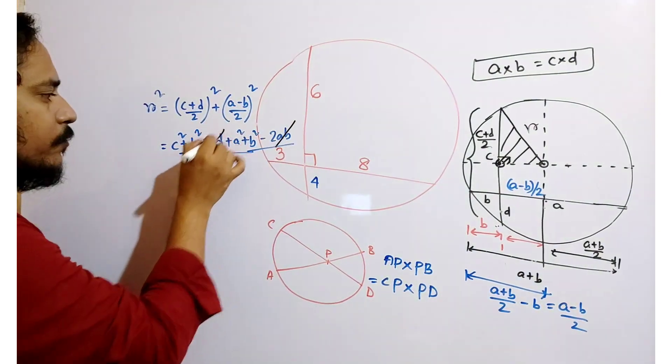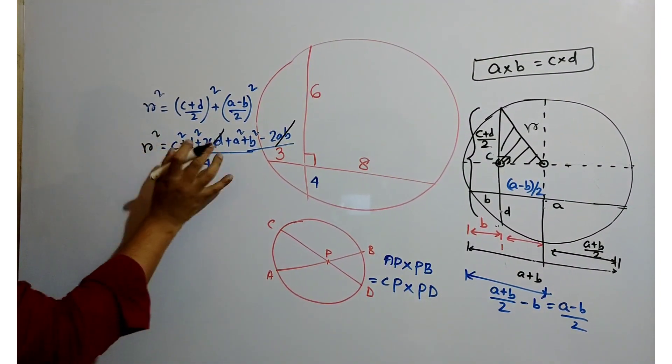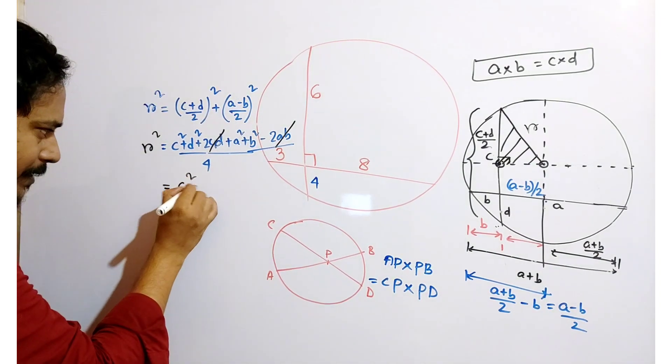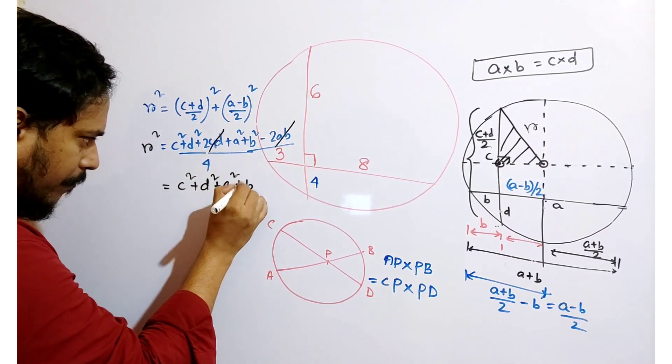Those two chords intersect inside the circle. So 2AB and 2CD cancel each other. So R square is the value of this part. So what is C square plus D square plus A square plus B square by 4?